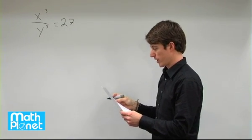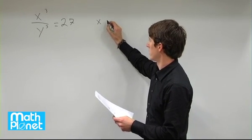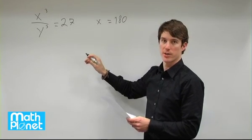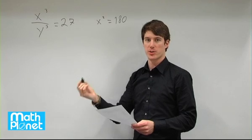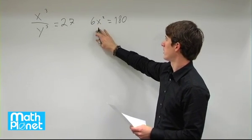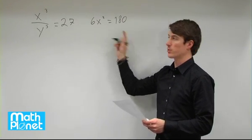We're also told that the area of the larger one, the x, is 180. So the area is going to be x squared is one face of the cube. There are six faces on a cube. So the area of the larger cube is 6 times x squared equals 180.